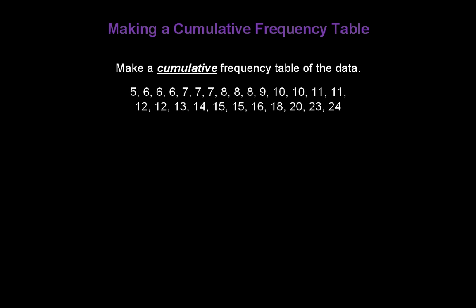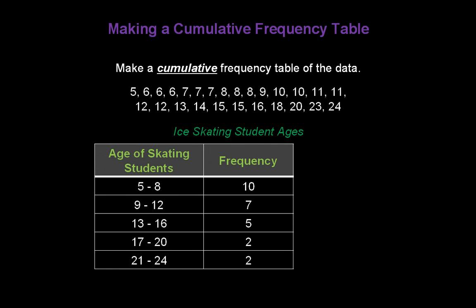If you watched that video titled Frequency Tables, at the end we created a frequency table with the data shown on the screen. And our table looked like this. It was a list of ice skating student ages grouped in intervals of four: 5 to 8, 9 to 12, 13 to 16, and so forth. Now, we want to turn this frequency table into a cumulative frequency table.